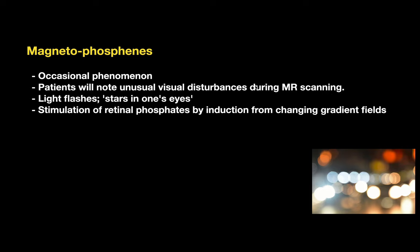There is a concept called magnetophosphenes, where the patient notes unusual visual disturbances during MR scanning — light flashes or stars in one eye. This is caused by stimulation of retinal phosphenes by induction from the changing gradient field, and is an occasional phenomenon that occurs in some patients.